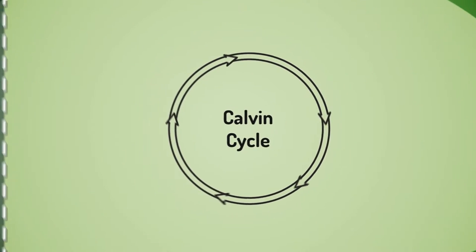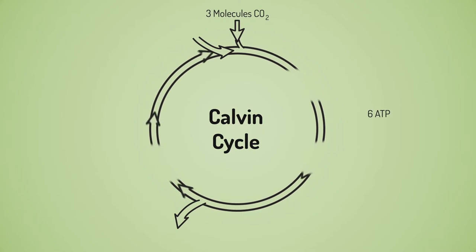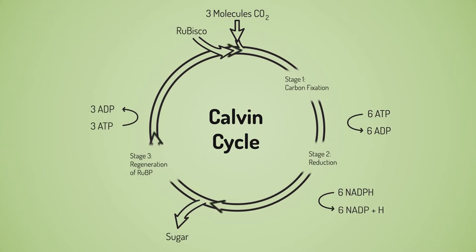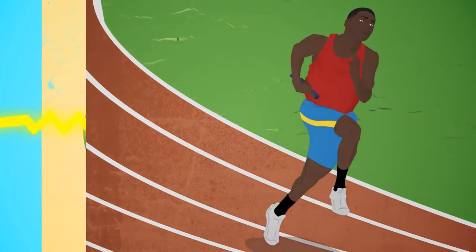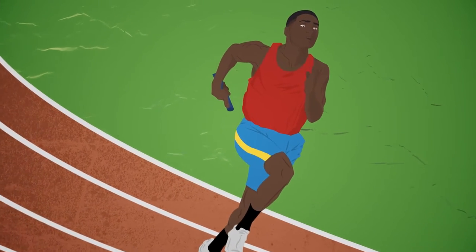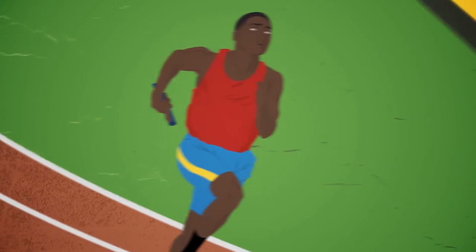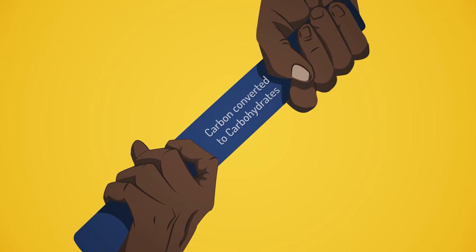As we have learned, the light reactions produce ATP and NADPH, which act as fuel for the light-independent reactions. For this process, think of the light-independent reactions as a track relay. Carbon is the baton passed from runner to runner and is converted into essential carbohydrates.